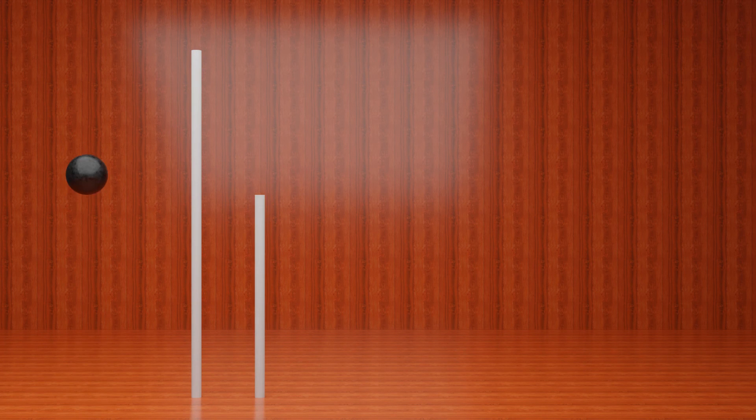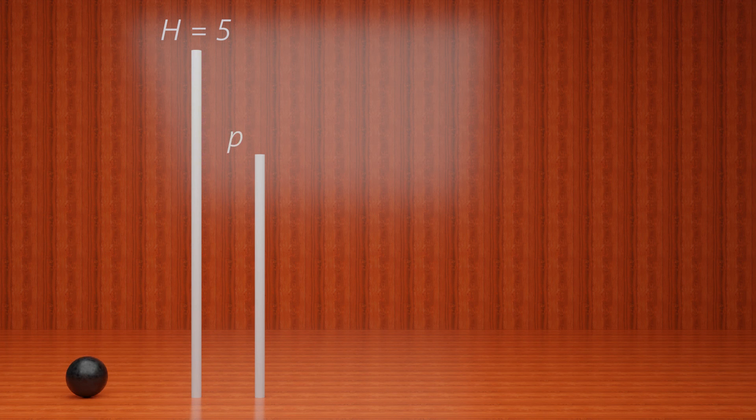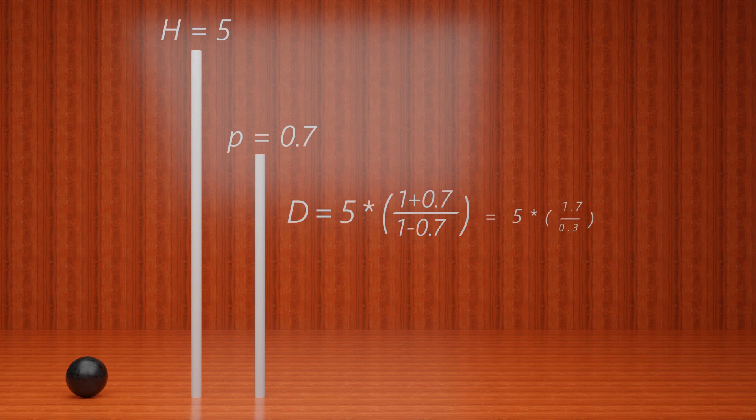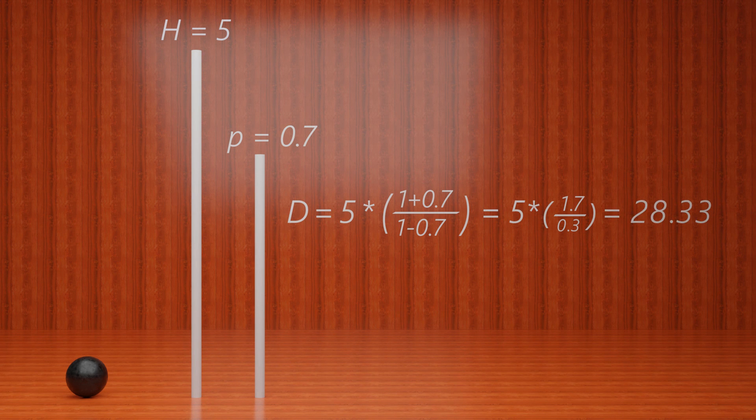Just a quick example to close things out. If our initial height happens to be 5 and the proportion that the ball bounces back is 0.7, then the distance the ball travels is 5 times 1 plus 0.7 divided by 1 minus 0.7, which is 5 times 1.7 over 0.3, which happens to be 28.33 units. And in this case, our units happen to be meters.